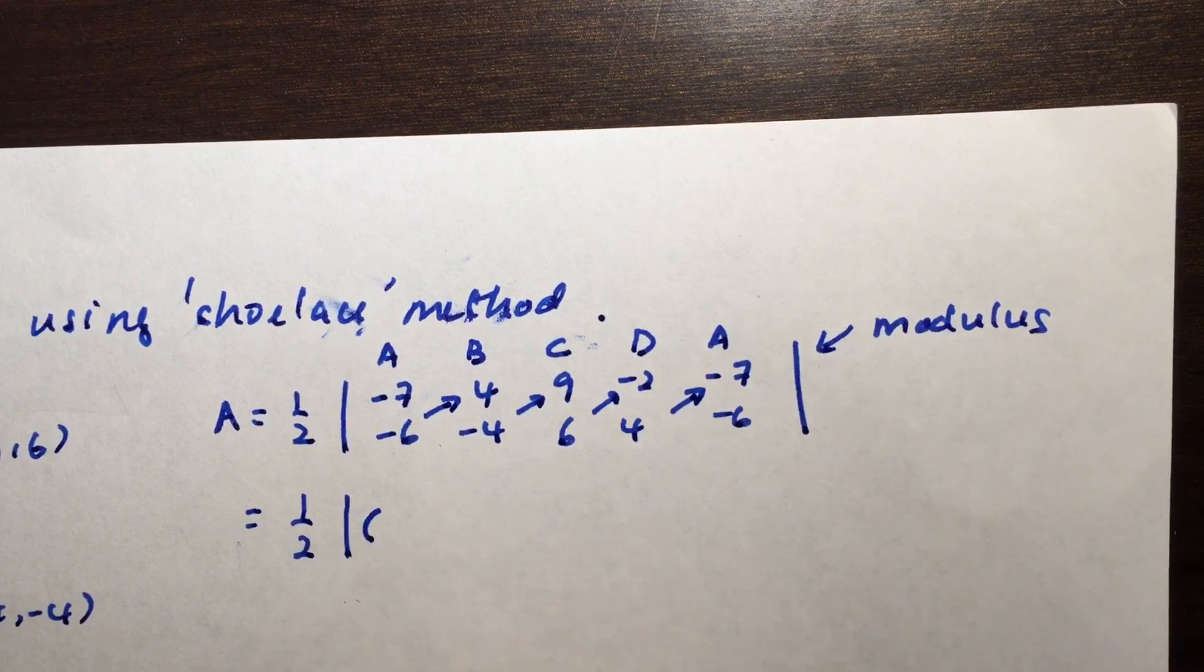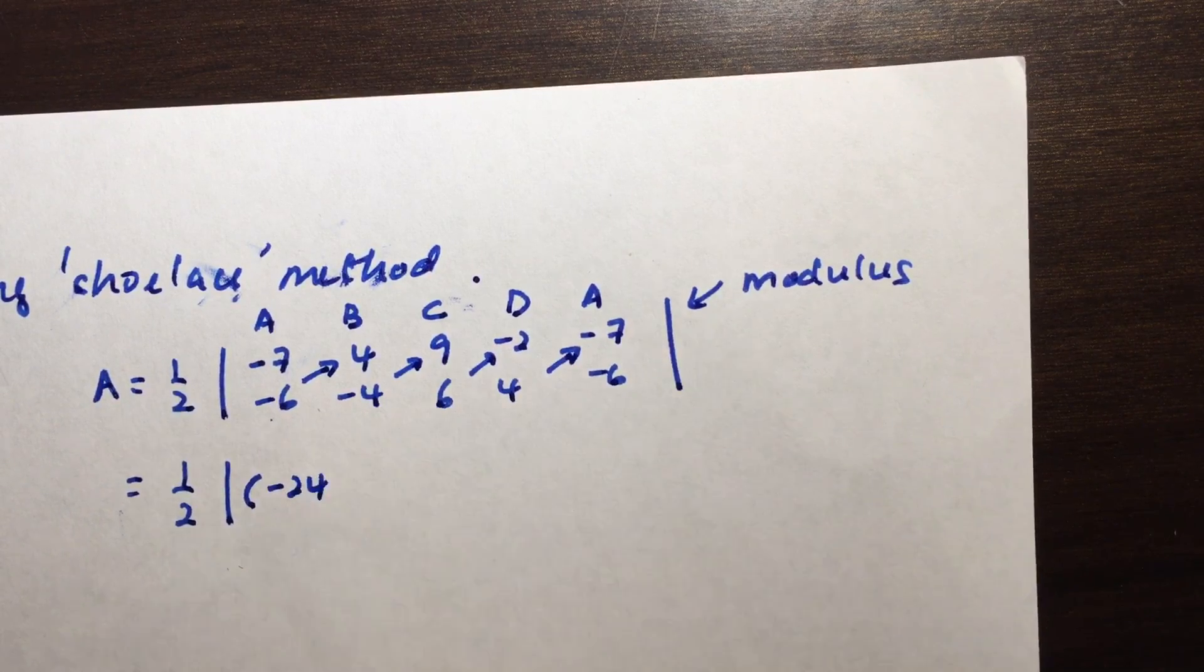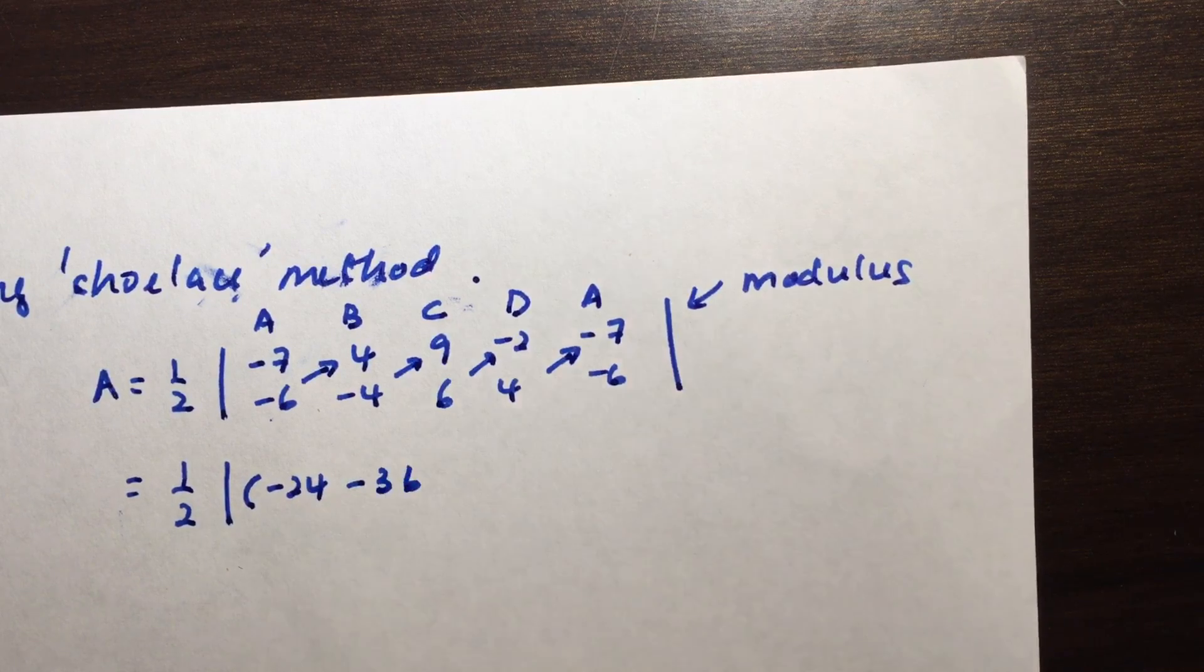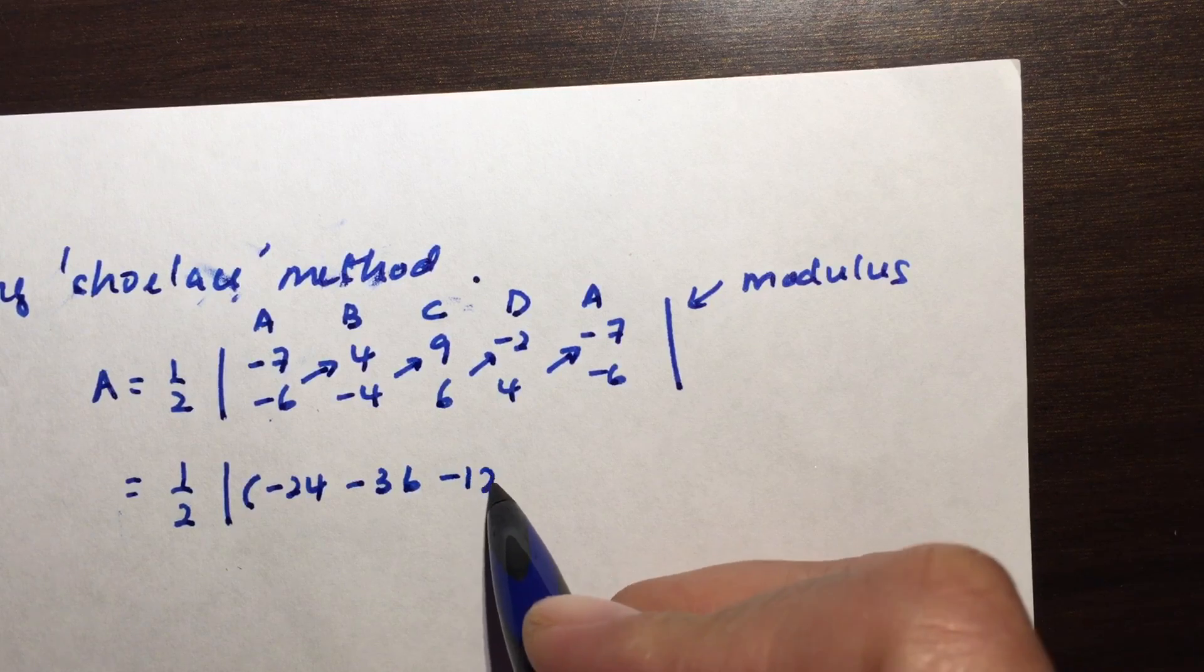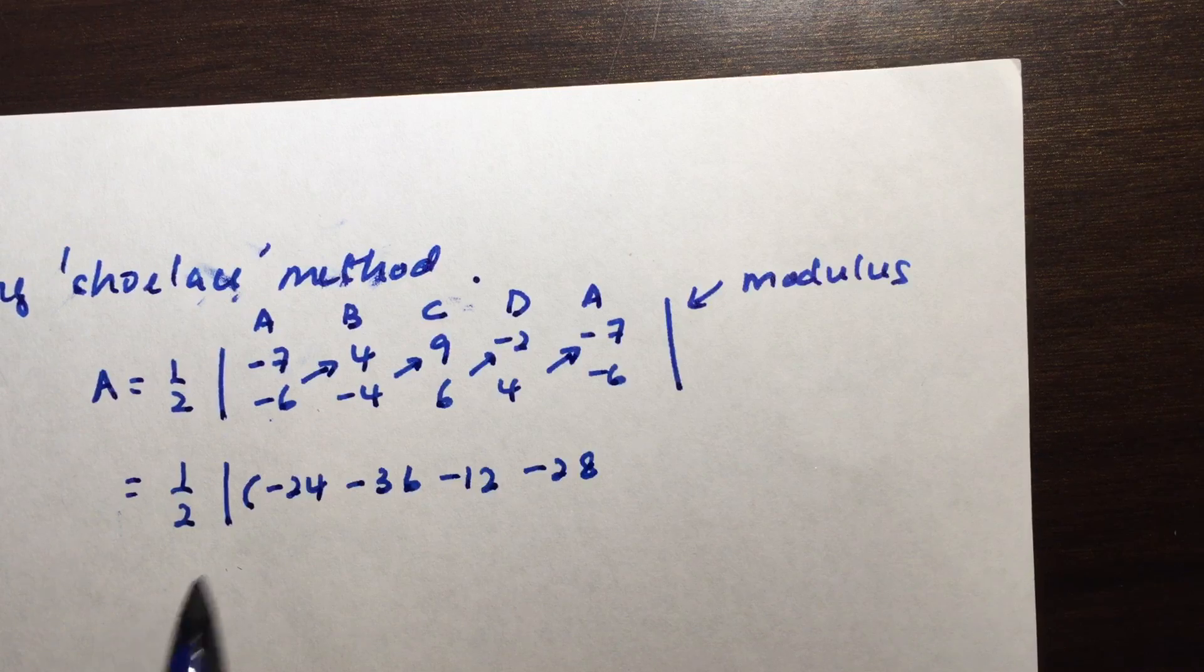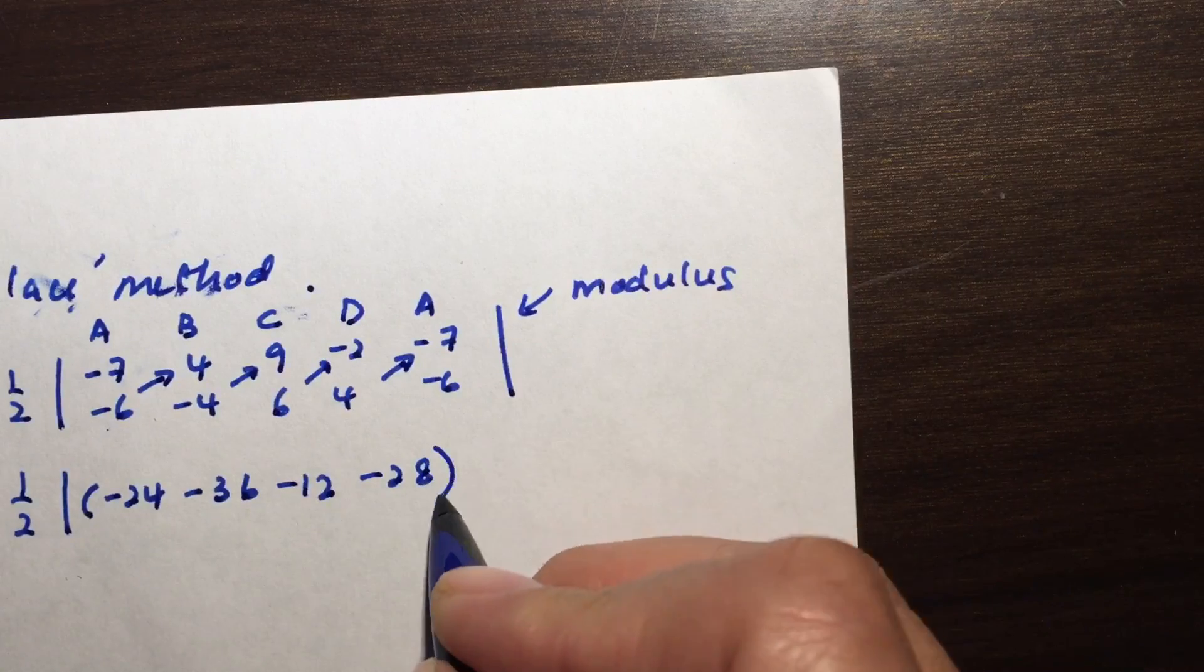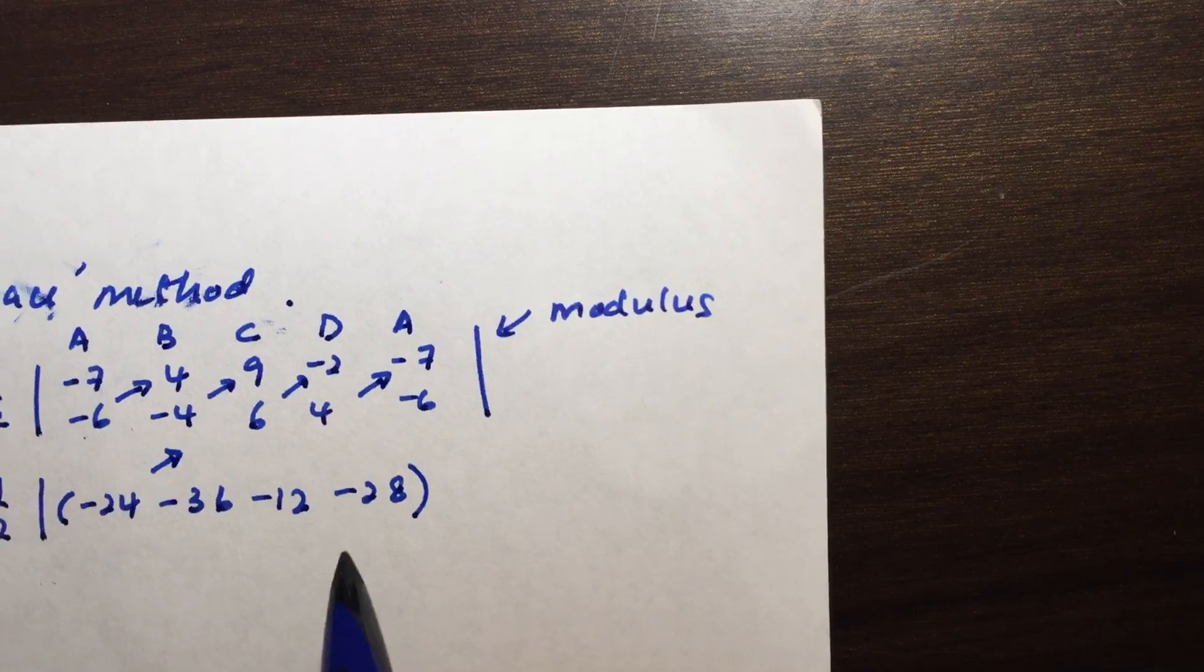What I'm going to do is multiply these two and write it as the first group. I'm going to have the first bracket here: negative 6 times 4 will give me negative 24, negative 4 times 9 give me negative 36, 6 times negative 2 will give me negative 12, and 4 times negative 7 will give me negative 28. So actually I'm adding up all the negative numbers, so I'll just write it as a subtraction. This is the up group.